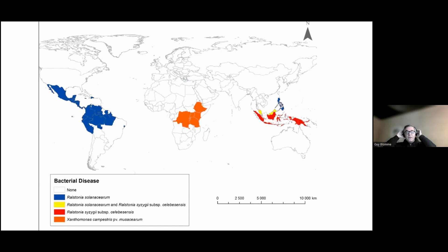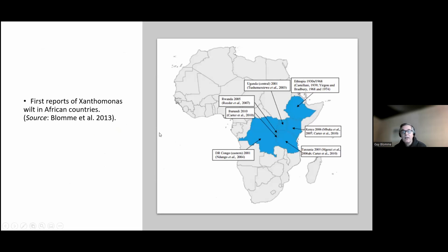Xanthomonas wilt is currently only present in East and Central Africa, as you can see here in the orange colored countries. The other bacterial wilt, for example Moko, is present in Latin America and Asia, and banana blood disease is also present in Asia. Xanthomonas wilt was first discovered in Ethiopia already in the 1930s by Castellani, and that was officially confirmed in the late 60s and early 70s in Ethiopia.